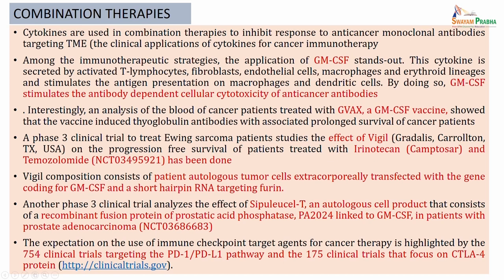Interestingly, there was an analysis of blood cancer patients treated with GVAX. This GVAX is basically a GM-CSF vaccine which has shown that vaccine-induced thyroglobin antibodies are associated with prolonged survival of cancer patients. There is a phase 3 clinical trial to treat Ewing sarcoma with a compound called Vigil. This Vigil on the progression has been studied along with irinotecan and temozolomide. So there are three components coming together in this particular trial on Ewing sarcoma.